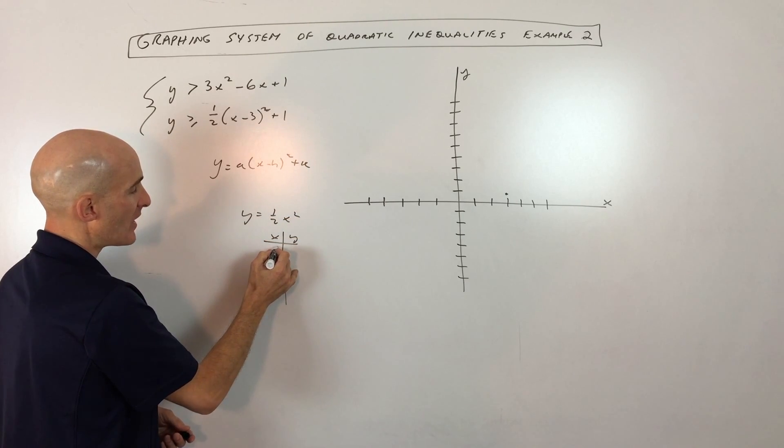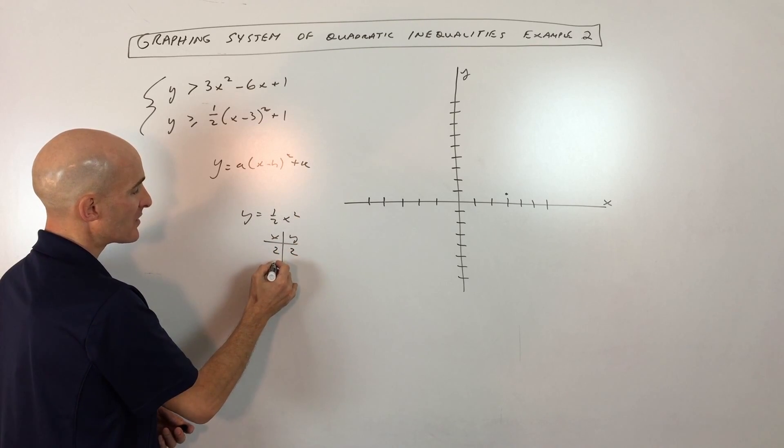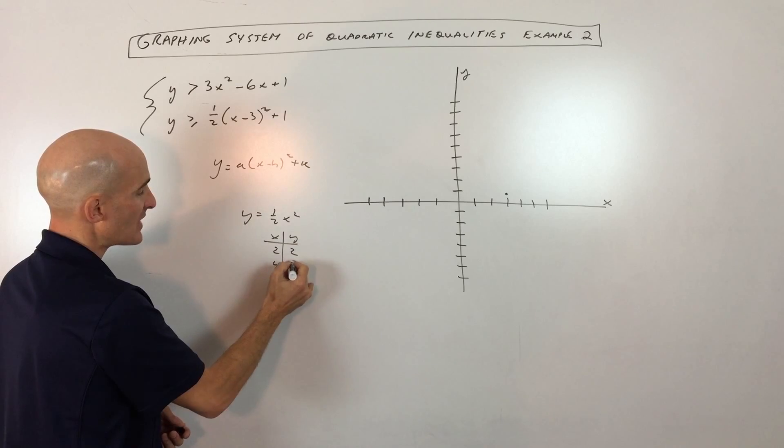I'm just going to plot some values. If x is, let's say, 2, 2 squared is 4 times 1 half is 2. If we pick 4, that's going to be 16 times 1 half is 8.